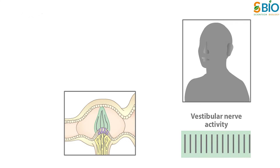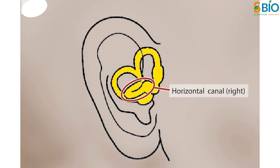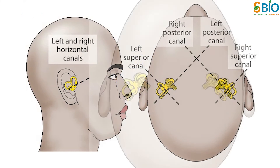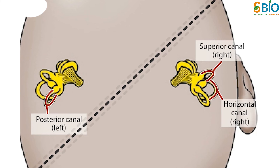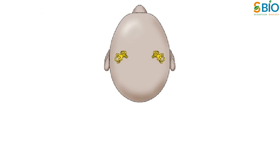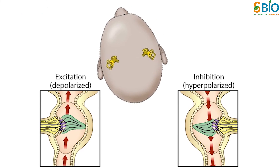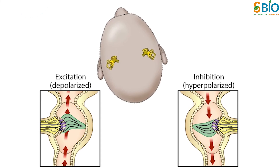Each semicircular canal works in concert with a partner located on the other side of the head that has its hair cells aligned oppositely. There are three such pairs: one pair of horizontal canals, and the superior canal on each side working with the posterior canal on the other side — both are in the same plane. The orientation of the horizontal canals makes them selectively sensitive to rotation in the horizontal plane; the hair cells in the canal towards which the head is turning are depolarized, while those on the other side are hyperpolarized.